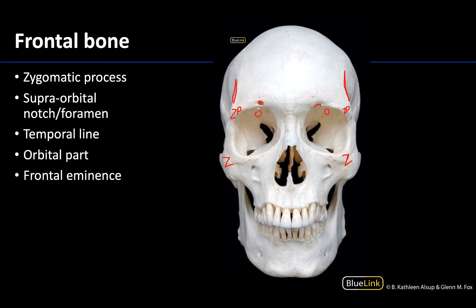Let's identify where the frontal eminences are located — about here and here. These are very slightly rounded eminences or elevations of the frontal bone. They are typically not very prominent in adult skulls, but are generally larger in juvenile skulls.